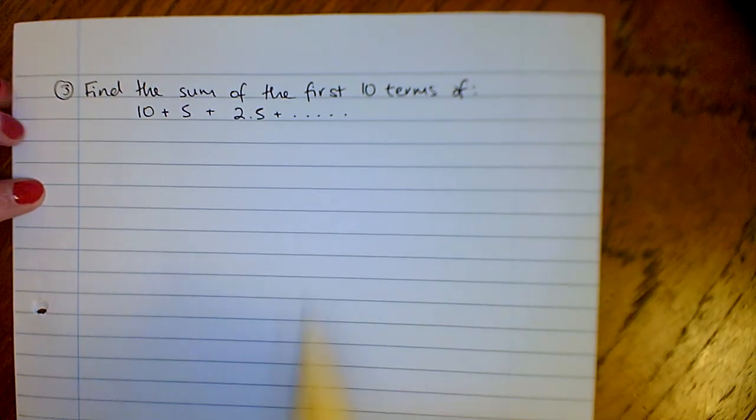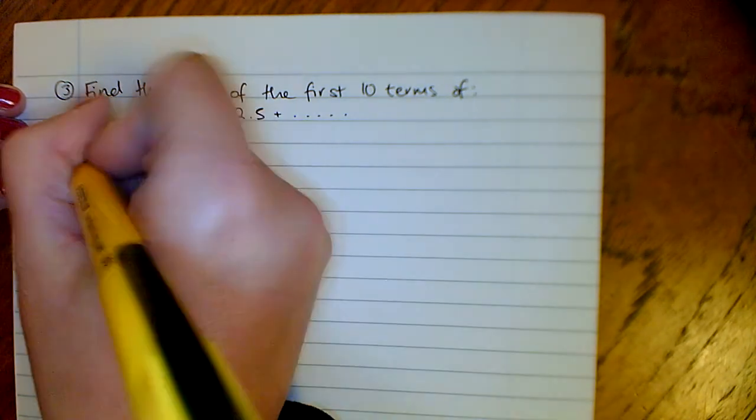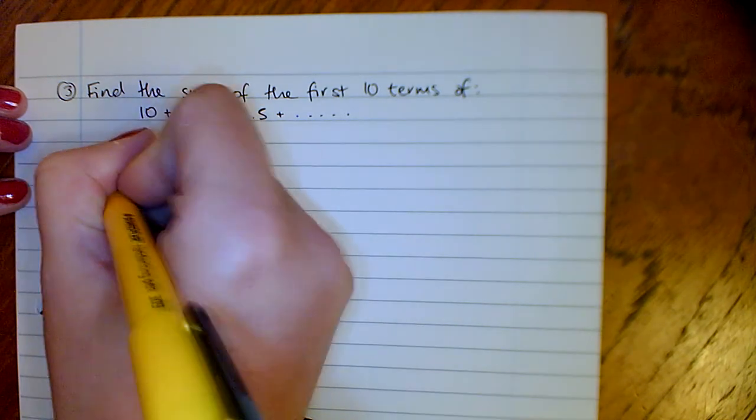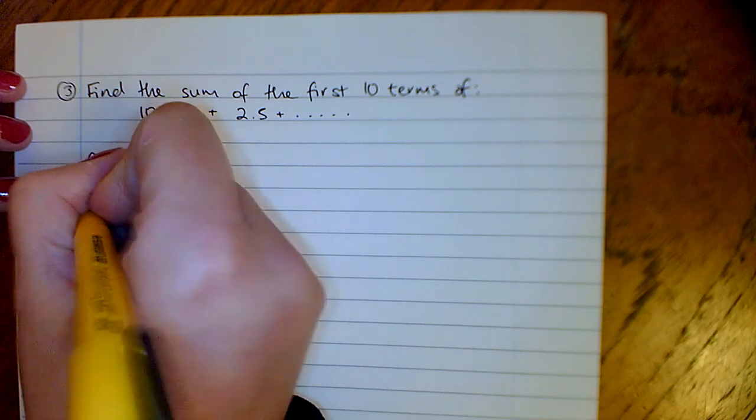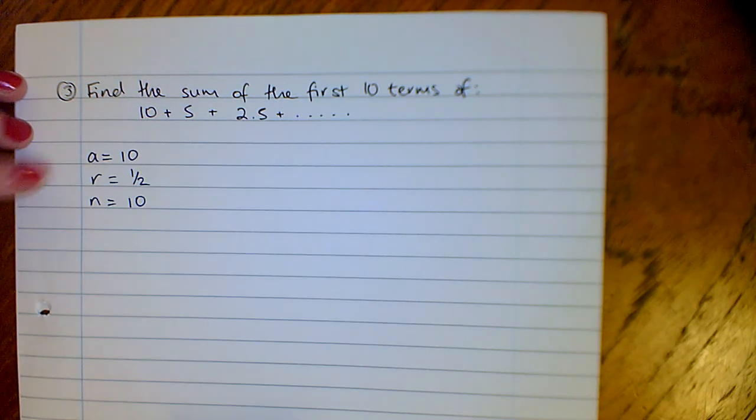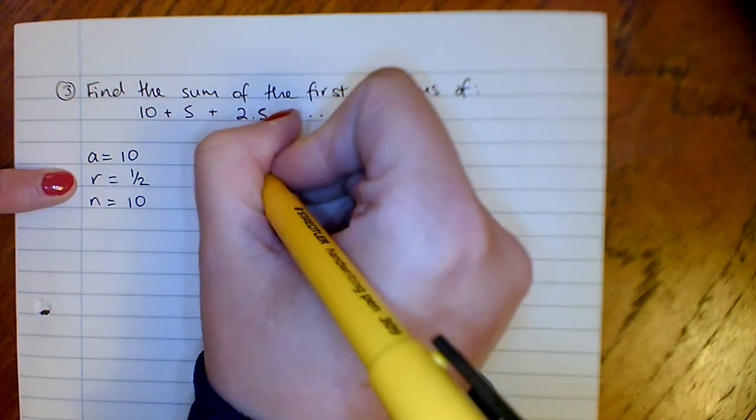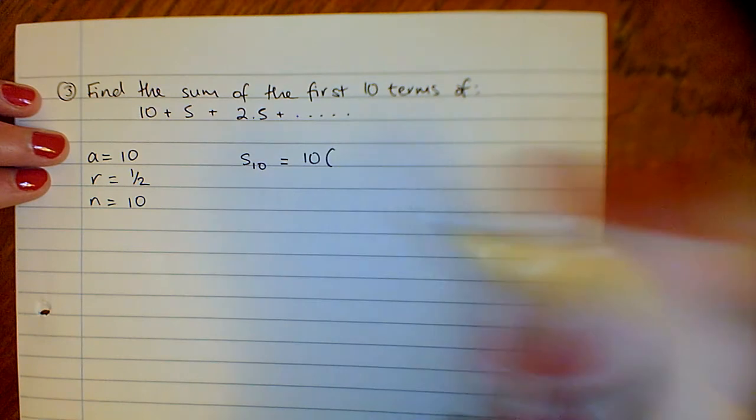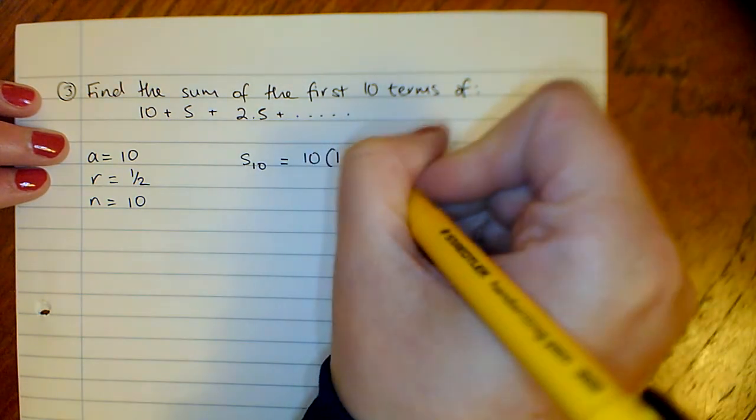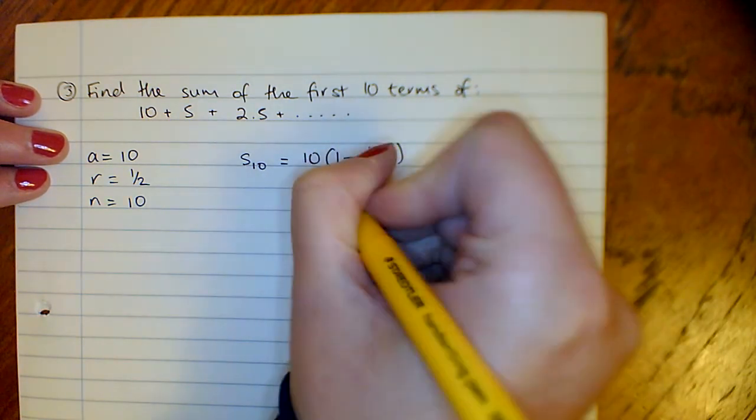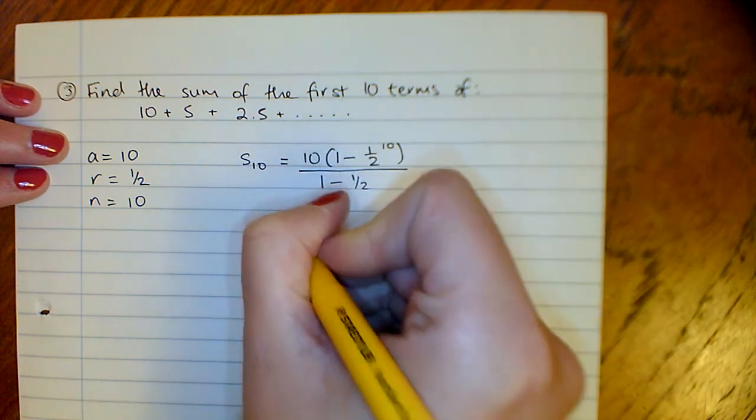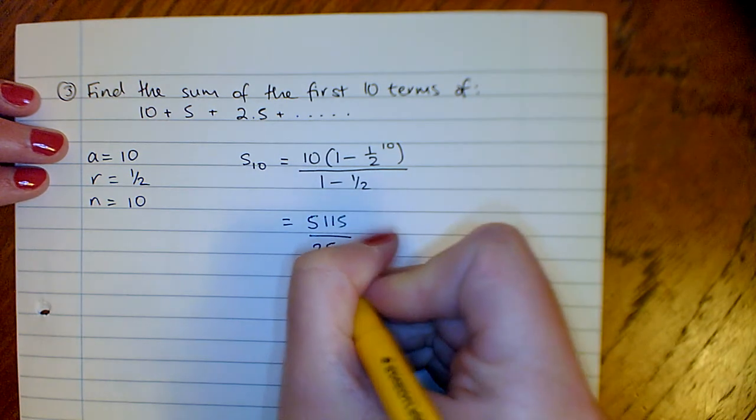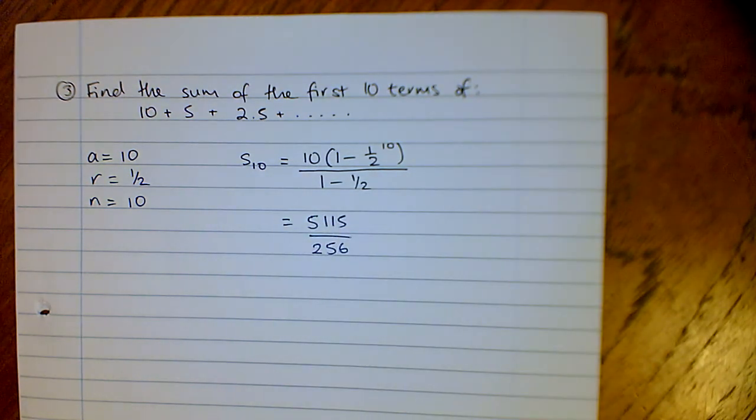Our third one, find the sum of the first 10 terms of 10 plus 5 plus 2.5, etc. Our first term is 10, our ratio this time is half, and we want to find the sum of the first 10 terms. Our ratio is less than 1, so I'm going to use the sum of the first 10 terms as A times (1 minus R to the power of 10) over (1 minus R). When you work that out, you get 5,115 over 256.